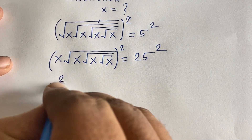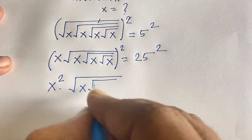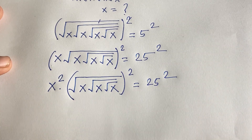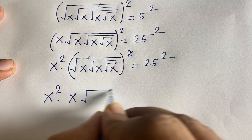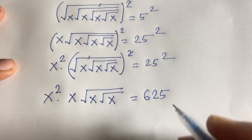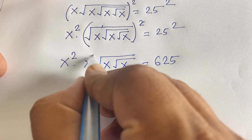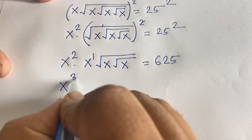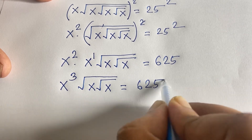After squaring both sides again, x squared times the remaining square root terms equals 25 squared, which is 625. Since x squared times square root of x gives x to the power of 3 (adding exponent 2 plus 1), we get x cubed times square root of x times square root of x equals 625.